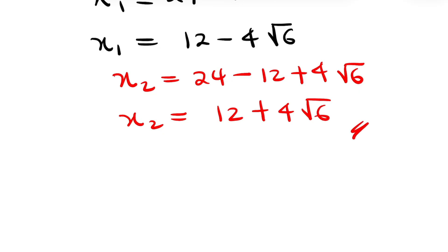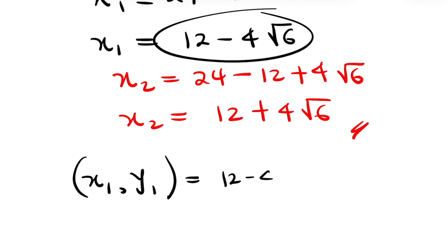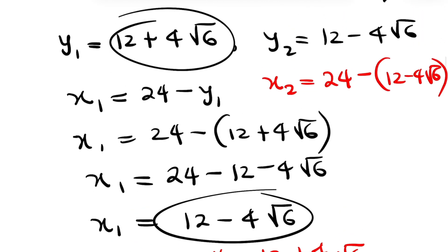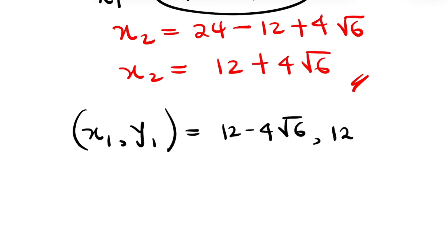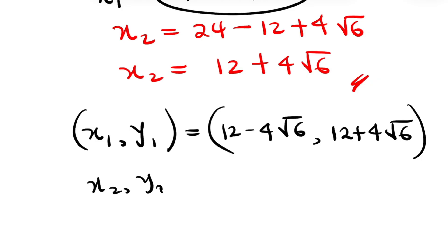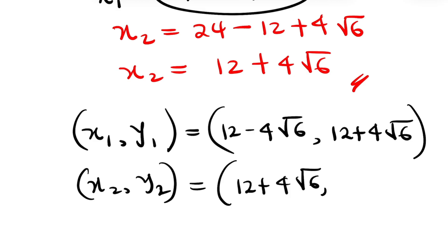Bringing the solutions together: (x1, y1) equals (12 minus 4 root 6, 12 plus 4 root 6), and (x2, y2) equals (12 plus 4 root 6, 12 minus 4 root 6) — simply a reversal. This is our final answer. If you have enjoyed this video, please hit the like button and subscribe to my YouTube channel, and I will see you in my next video.